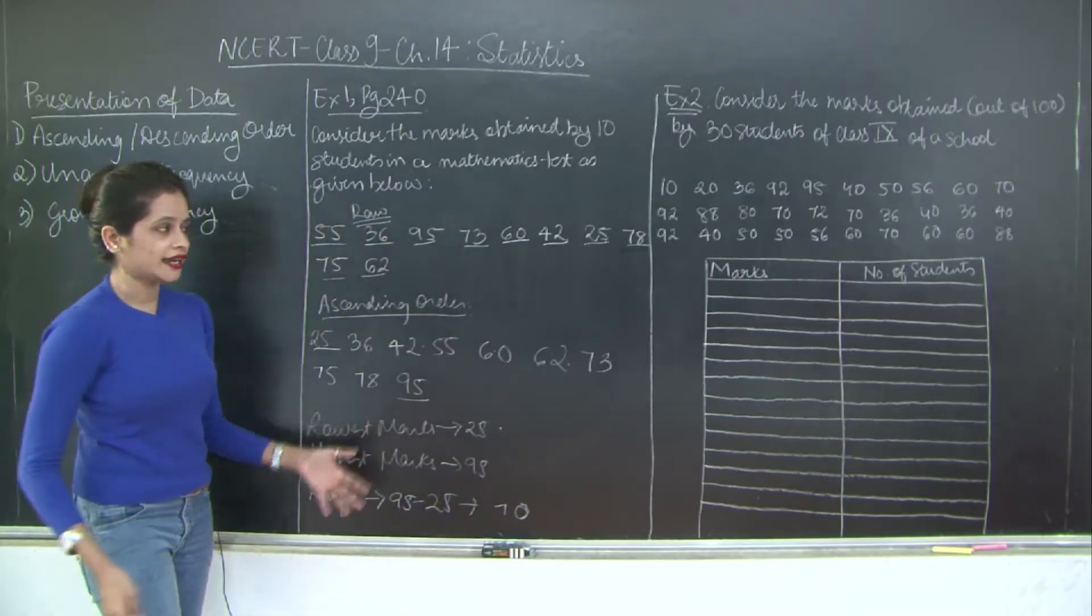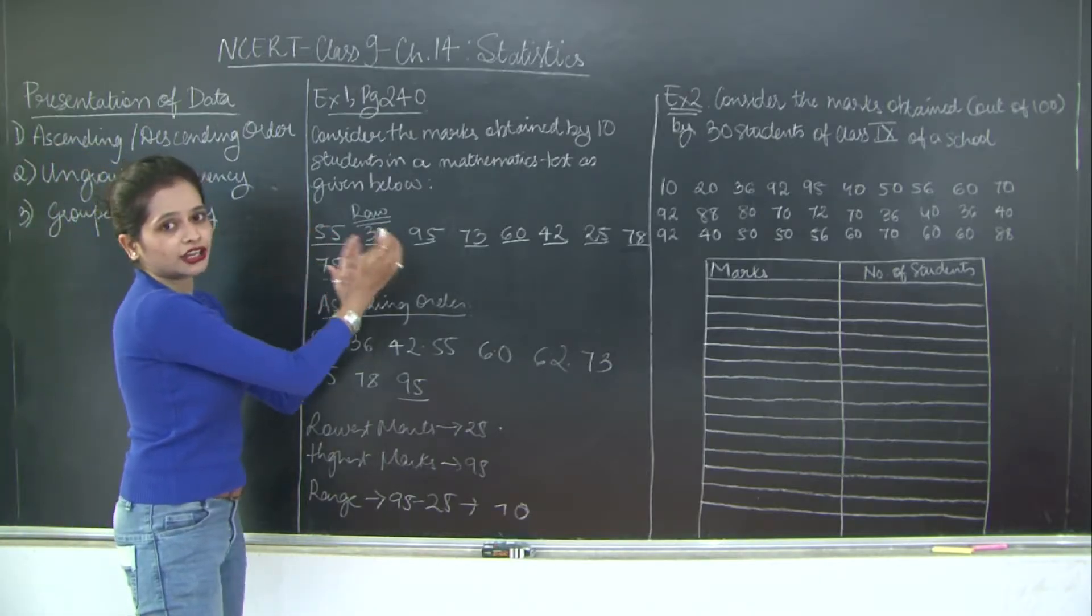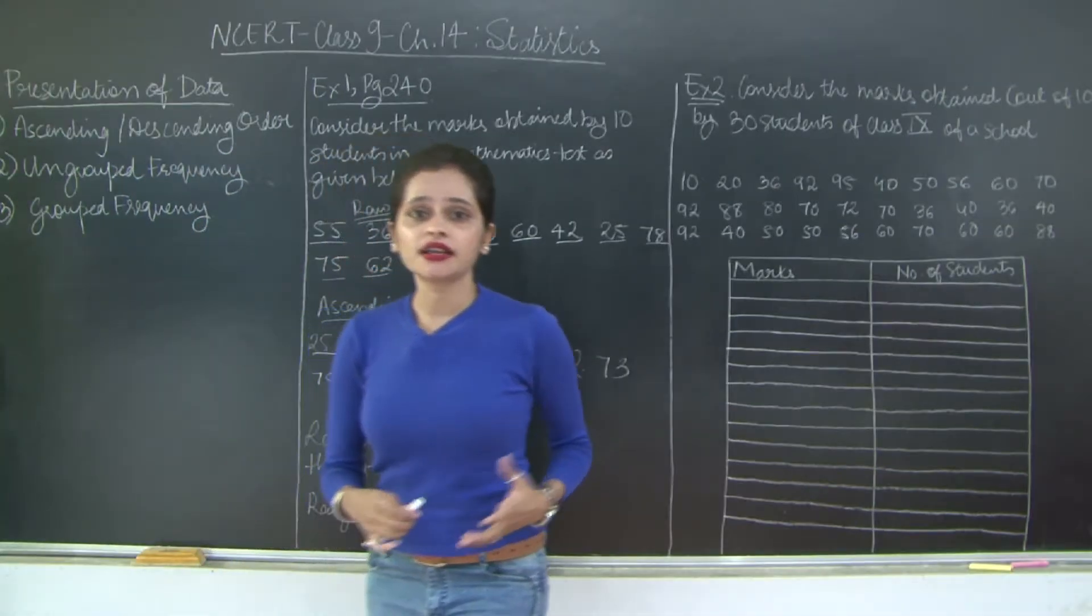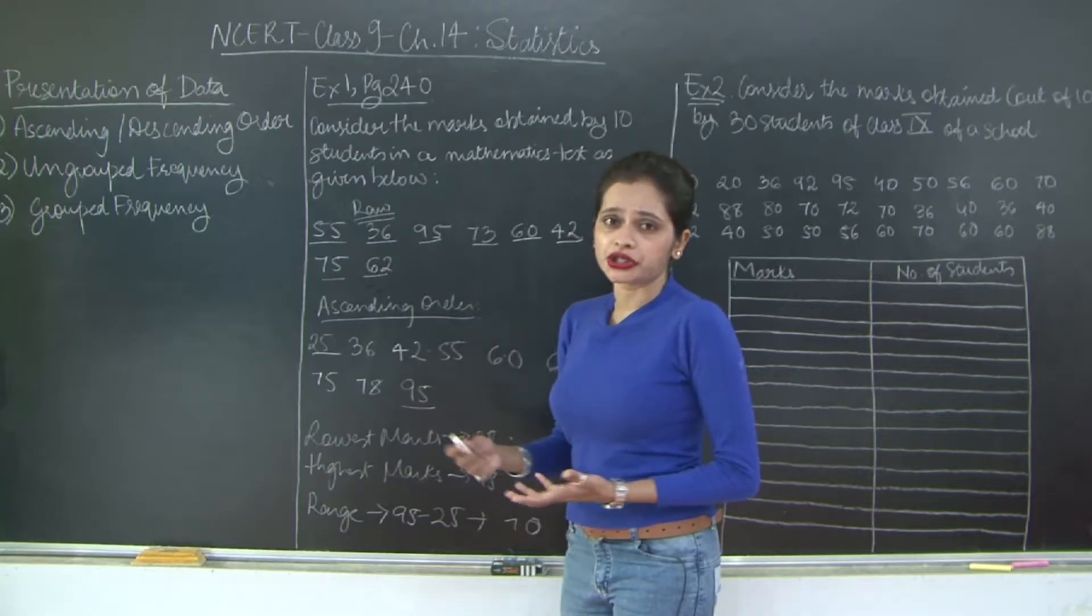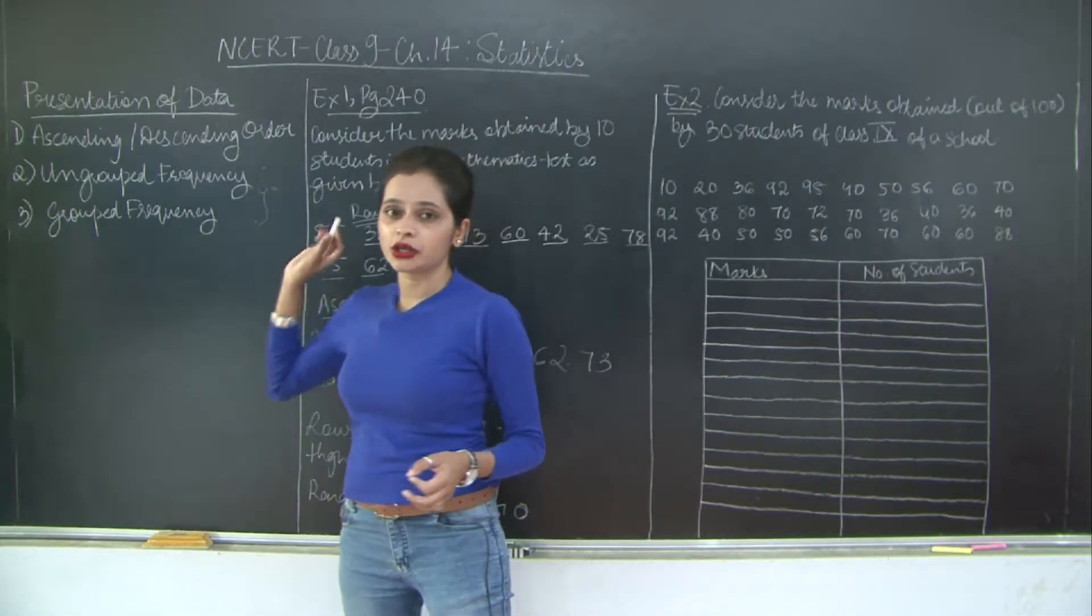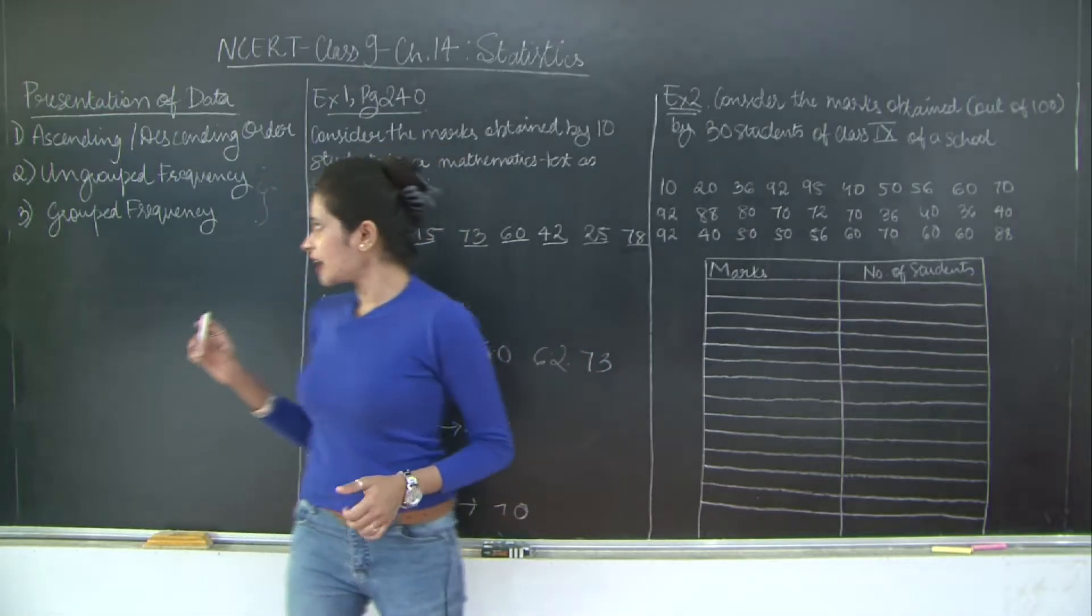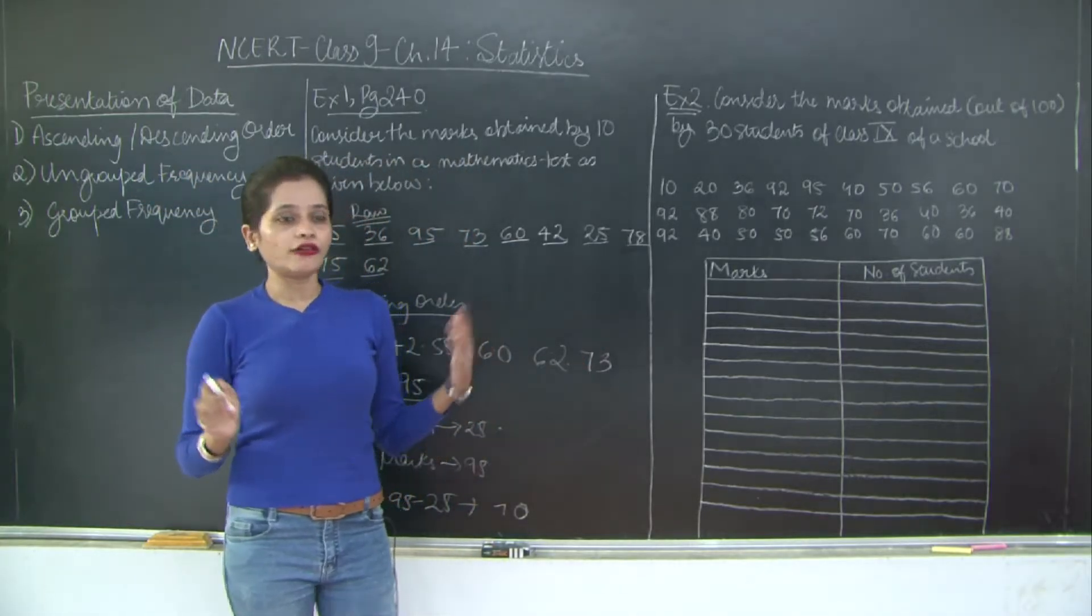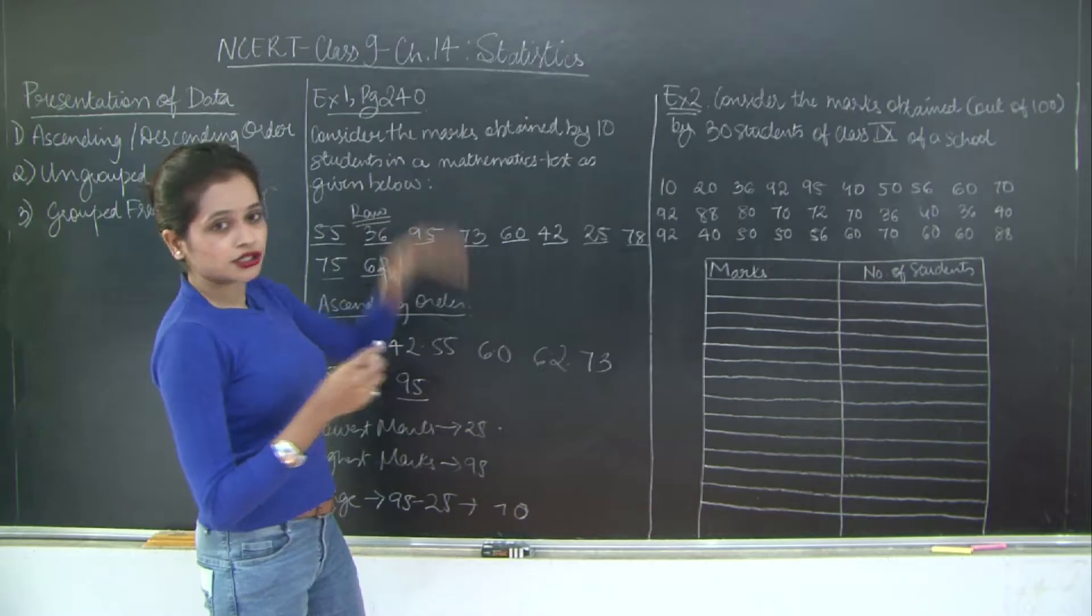So here what was happening is we were dealing with a few collection of data or number of observations. But let's say you have a lot of data, let's say about a school, then it would be impossible to arrange your data in ascending and descending order without a machine. So now we are going to proceed forward with grouped and ungrouped frequency. These are nothing but representation of your data in a tabular format. And they are going to group your data. So although the name suggests ungrouped frequency, it's actually grouping of your data. But we will see how.